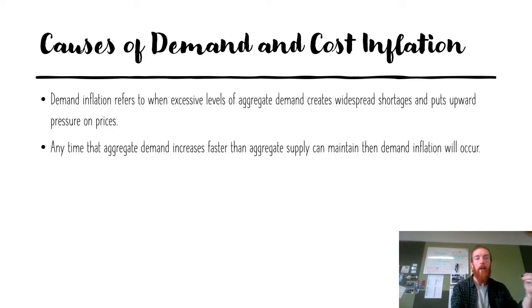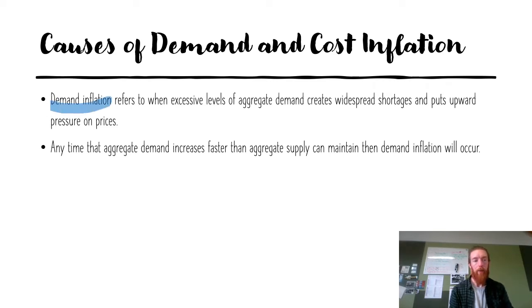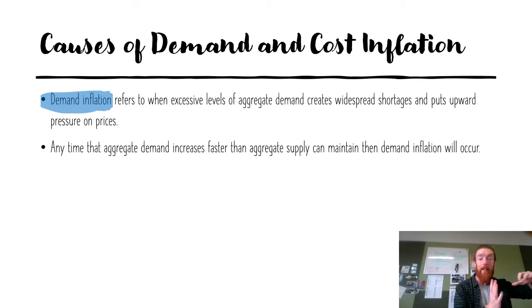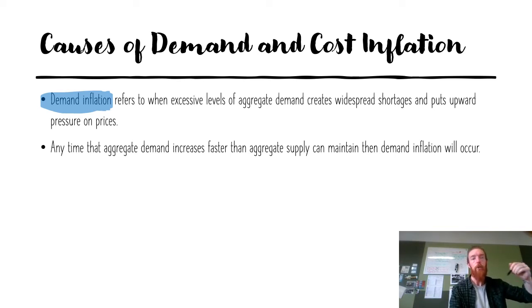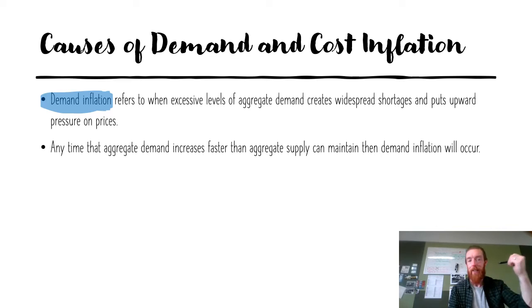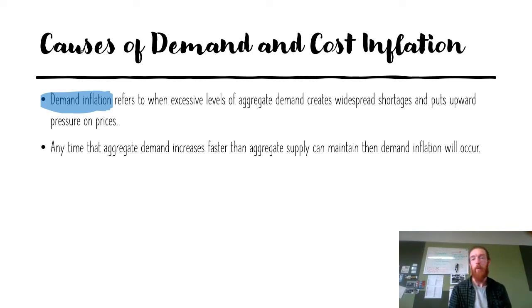Demand inflation refers to when excessive levels of aggregate demand cause widespread shortages and put upward pressure on prices. When there is not enough supply for the amount of demand, consumers try to outbid each other, driving prices up. You see it with housing — when interest rates were at record lows with a cash rate of 0.1%, people were able to borrow money and demand housing, driving up house prices as they outbid each other. Anytime aggregate demand increases faster than aggregate supply can keep up, demand inflation will occur.